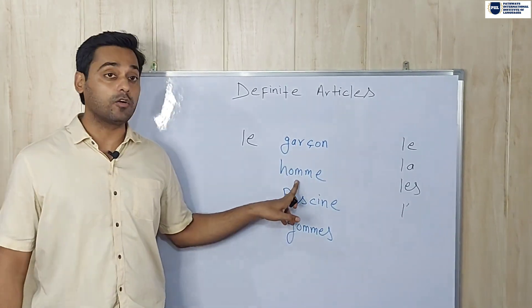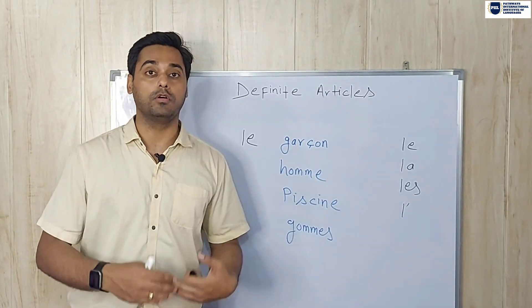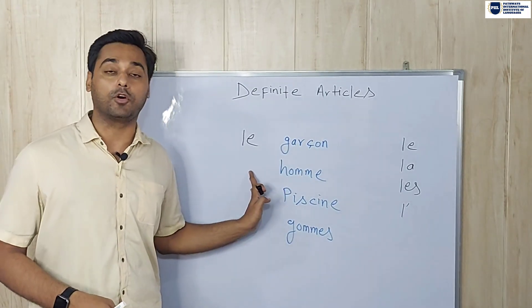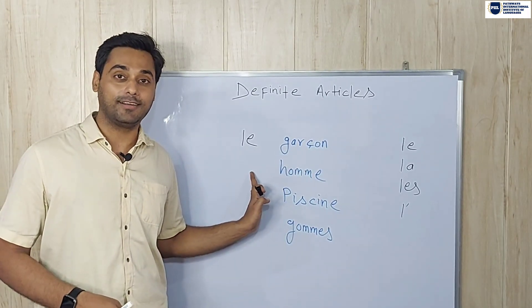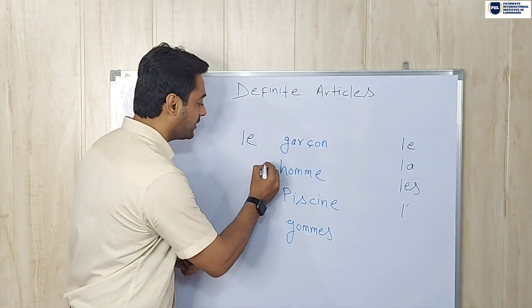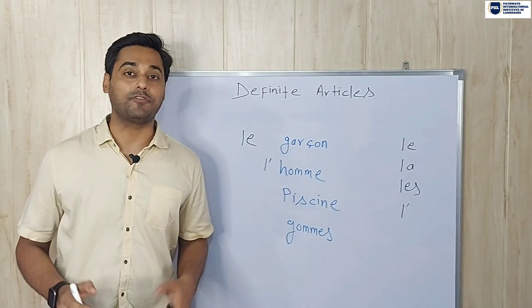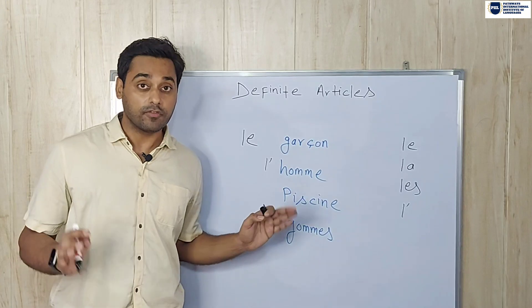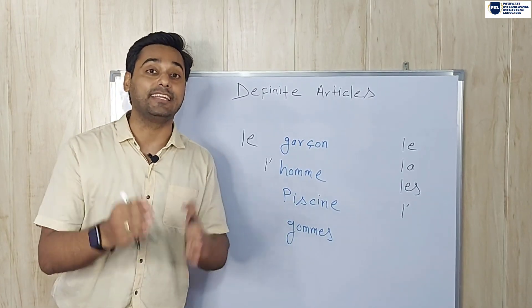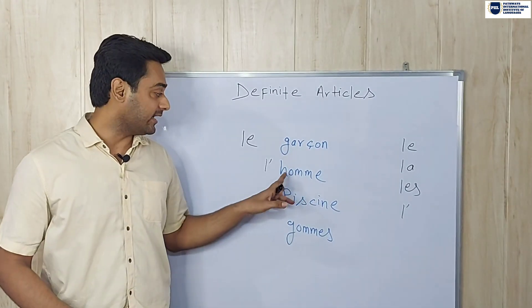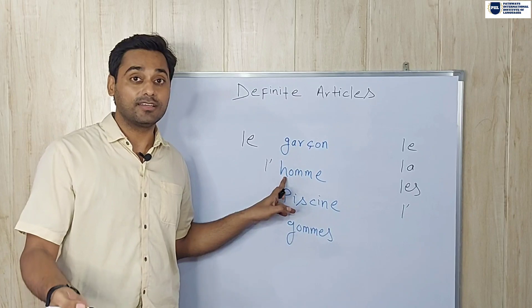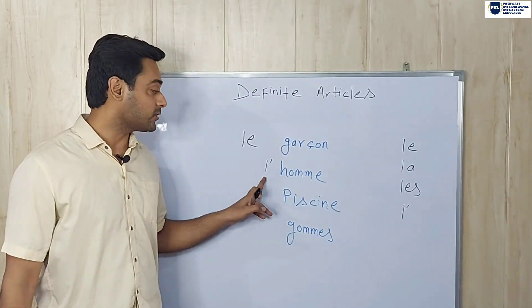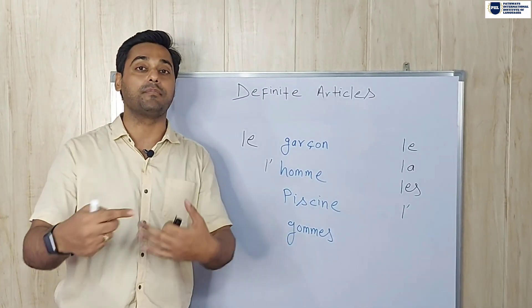The next noun is 'homme'. Homme means man. Which definite article should we put? We put l'apostrophe. Why? Because we use l'apostrophe before vowels and silent h. Here, h is silent. So it becomes 'l'homme' — the man.